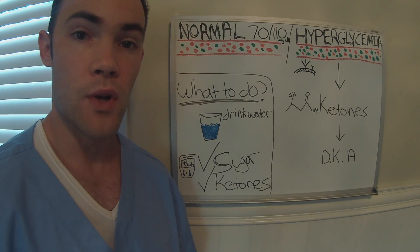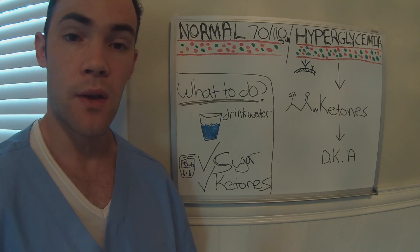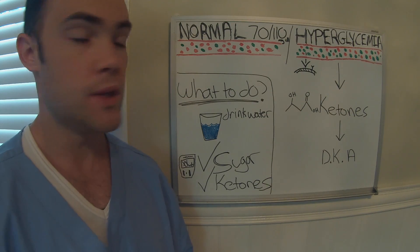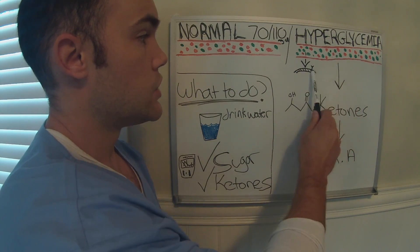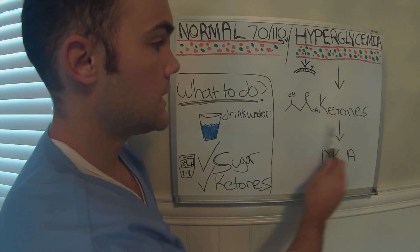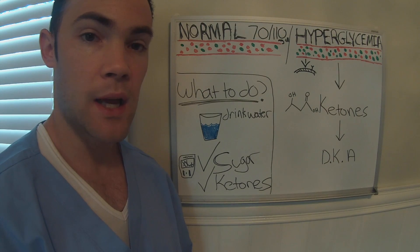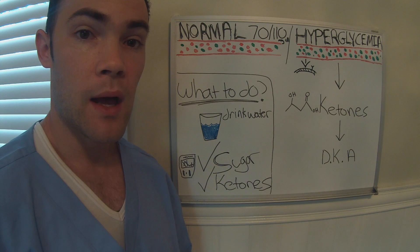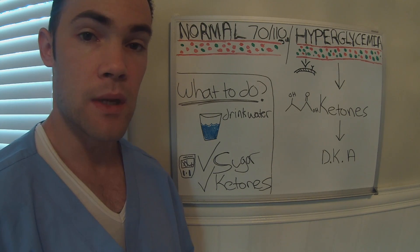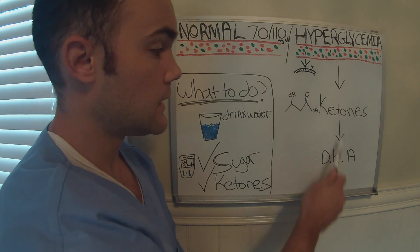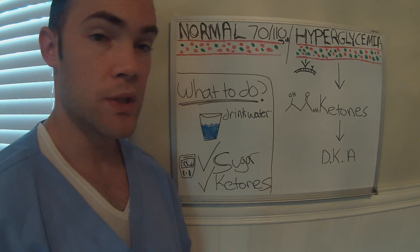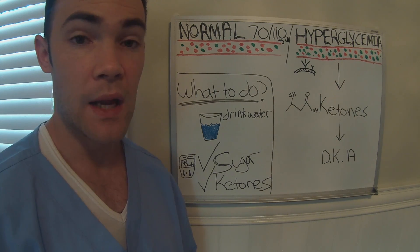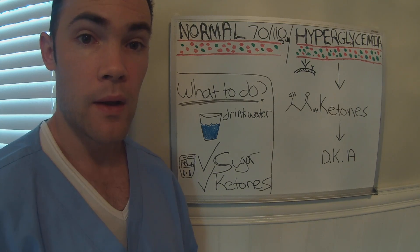Your body has an alternate mechanism to create energy — it can use chemicals other than glucose. One problem with this is that the alternate pathway creates ketones, which are acidic chemicals that can build up in your blood. When these acidic chemicals build up, they can cause many of the signs and symptoms of hyperglycemia and can even lead to diabetic ketoacidosis, which can be a very severe complication of diabetes requiring immediate medical attention.